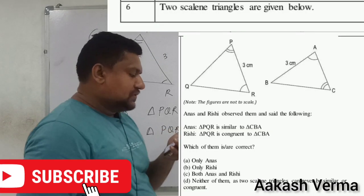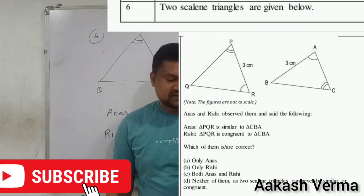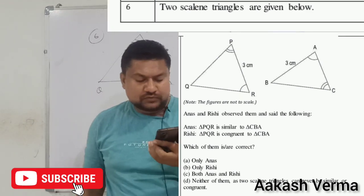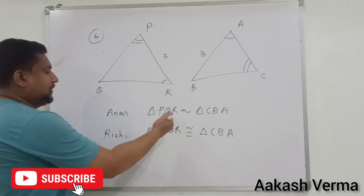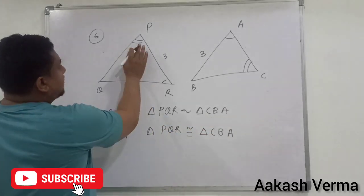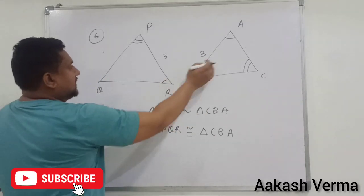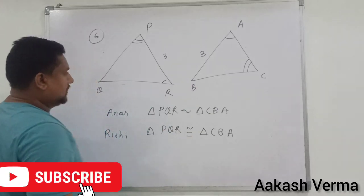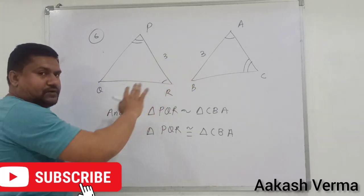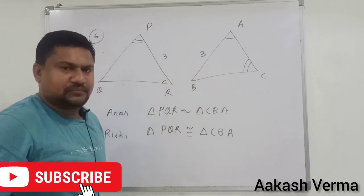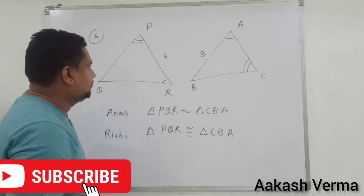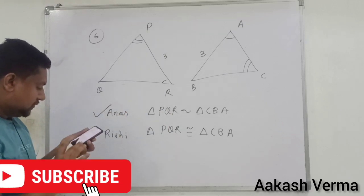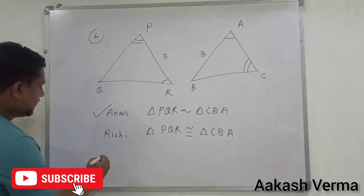Question number 6: two scalene triangles are given below. Anas and Rishi observed them. Anas said triangle PQR is similar to triangle CBA. You can see that angle P equals angle C, angle R equals angle A, angle Q equals angle B. So corresponding angles are equal, and when corresponding angles are equal we say the triangles are similar — sides don't matter here. So Anas is right, option A will be correct.